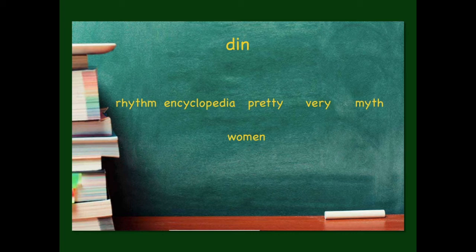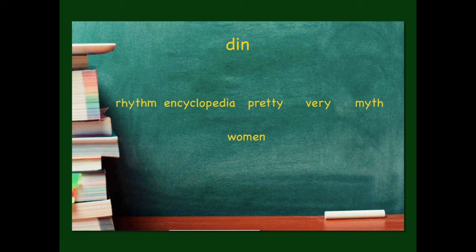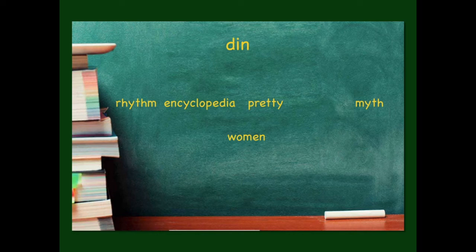Now let's compare the sounds. First we have din — rhythm — yup, that'll stay. Next one, encyclopedia — din — yeah, that'll stay. Pretty — din — yeah, that'll stay. Very — that'll go. Myth — yeah, that'll stay. Last one, women — yeah, that'll stay.